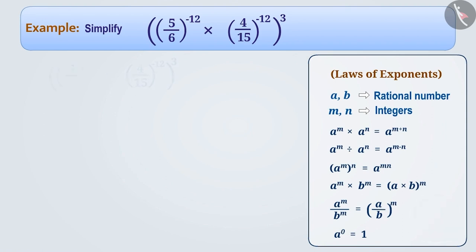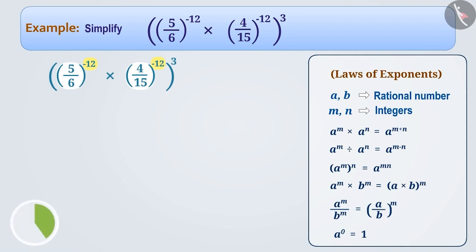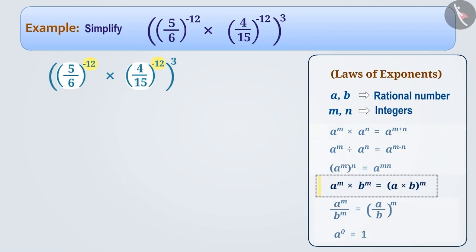Here we see that two exponents are being multiplied in brackets whose bases are different but the powers are the same. To simplify it, which rule should we use? Give it a thought. We will use this rule: a to the power m, multiplied by b to the power m, is equal to (a × b) to the power m.